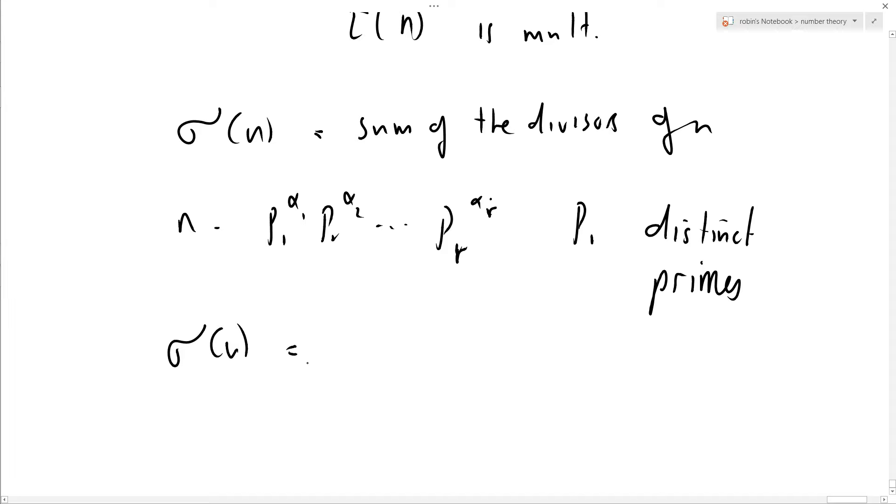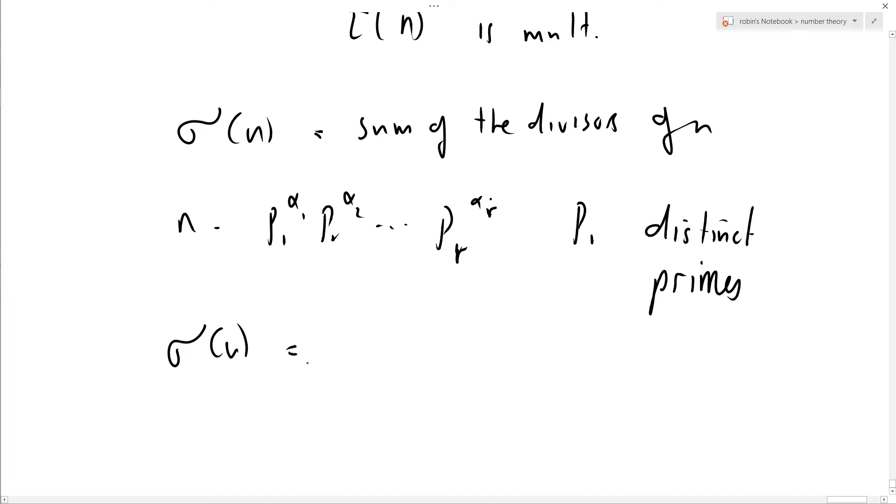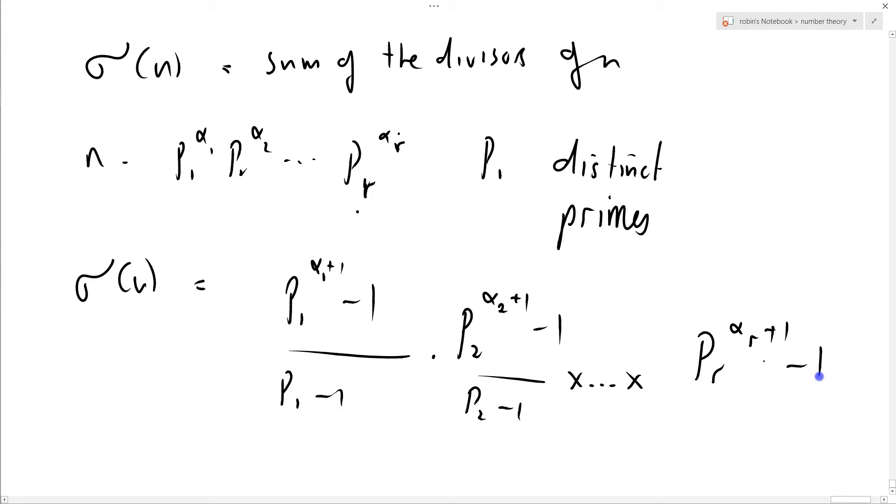The formula we had was sigma of n equals, see if I can get this right, it's p1 to the alpha 1 plus 1 minus 1 over p1 minus 1, times p2 to the alpha 2 plus 1 minus 1 over p2 minus 1, times all the way up to the final one, which is pr to the alpha r plus 1 minus 1 over pr minus 1.